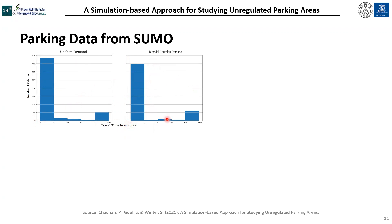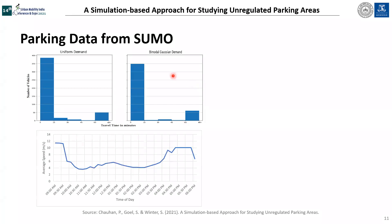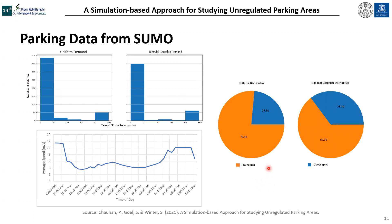The travel time of vehicles increased with an increase in parking demand because vehicles were then cruising around to find an empty parking space. Similarly, the average speed of the network went down each time parking demand went up — in the morning during office hours the average speed went down, and in the evening when office workers were leaving, the average speed went down again. We were also able to obtain parking occupancy data for each parking space — how much of the time a particular space was empty and occupied. In the bimodal Gaussian distribution, we found that a particular parking space was not as well utilized as it should have been, remaining unoccupied for a major portion of time. This parking data generated from SUMO helped us obtain different insights regarding parking behavior and parking demand in our test network.